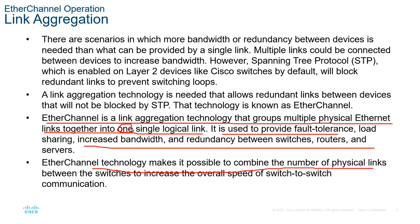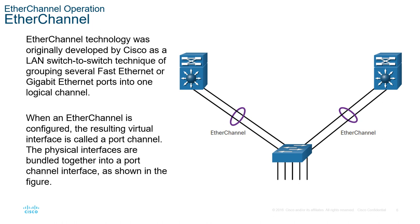EtherChannel technology makes it possible to combine a number of physical links between switches to increase the overall speed of switch-to-switch communication. For example, these two links — one is considered redundant, and with STP it would be blocked. So EtherChannel allows the switch to see them as one. That's the purpose of EtherChannel: to bundle multiple physical ports into one single logical link.